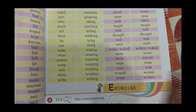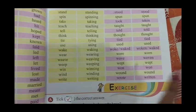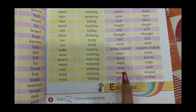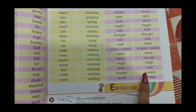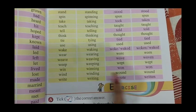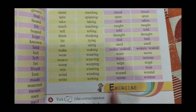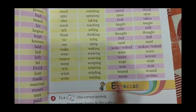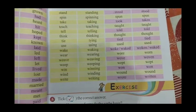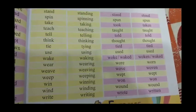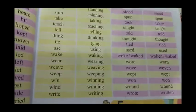Weep, weeping, wept, wept. Win, winning. Wind, wound, wound. Write, writing, wrote and written. So we have seen 4 forms everywhere — spellings are being changed.